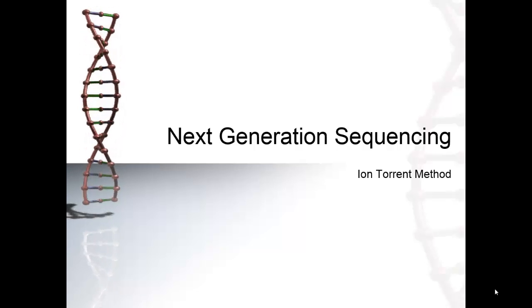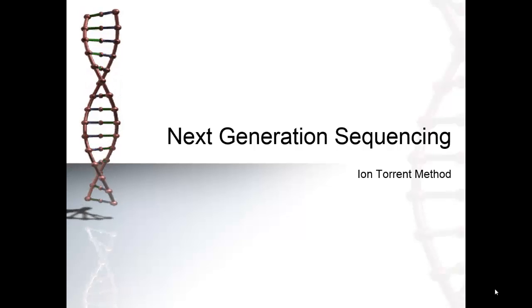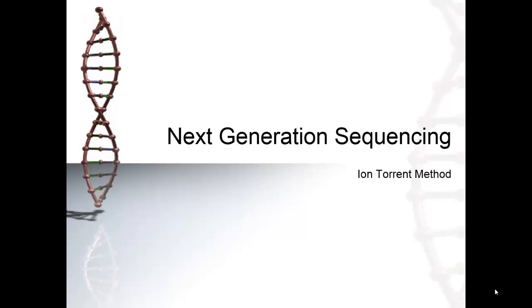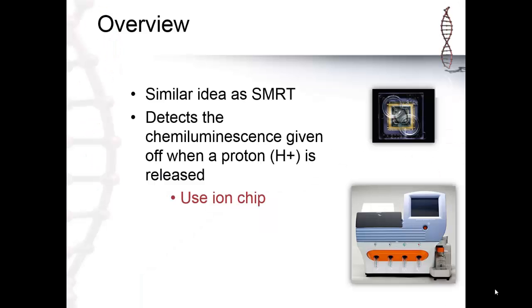This video gives an overview of ion torrent sequencing, another type of next-generation sequencing. The ion torrent method uses the same idea as small molecule real-time sequencing, where they sequence at enzymatic rate using DNA polymerase. Instead of using a fluorescent signal, they recognize that when a base is added to a DNA sequence, a hydrogen ion is released — and it is that ion that the computer detects to differentiate which base was added.